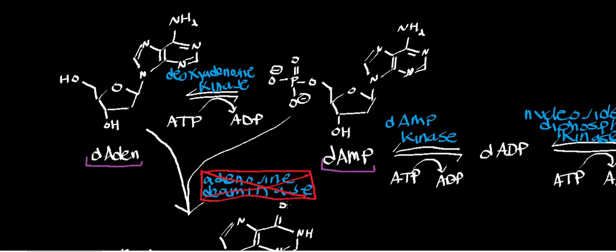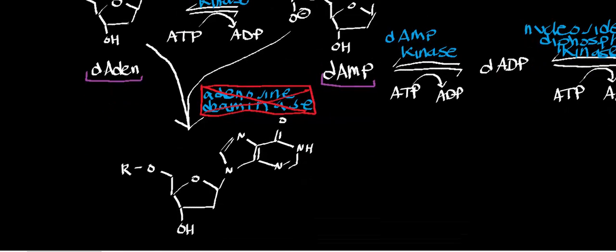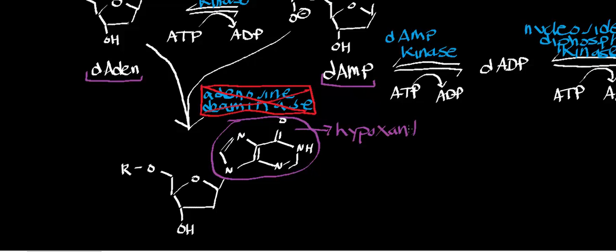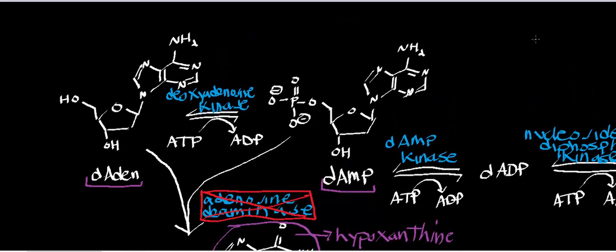You can view deoxyadenosine and deoxyadenosine monophosphate as existing at a branch point between nucleic acid synthesis and nucleic acid catabolism. If we go downward and react these with adenosine deaminase, we get hypoxanthine — a nucleotide that, once the base is removed from the 5-carbon sugar, can react with a series of other enzymes to give us urate in humans. That's one catabolism pathway. But what we're concerned with is what happens when adenosine deaminase is deficient — the other pathway leads into deoxynucleoside triphosphate synthesis.